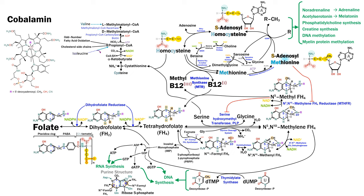Now we're at the final step to join the citric acid cycle: the conversion of methylmalonyl-CoA to succinyl-CoA by methylmalonyl-CoA mutase. This takes place in the mitochondria and uses adenosyl B12 as a cofactor, which shuttles its cobalt to the +2 oxidation state — a completely different mechanism to methionine synthase. Those are the only two enzymatic functions of B12 in the human body.